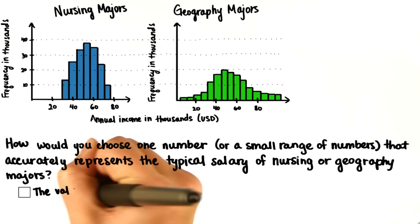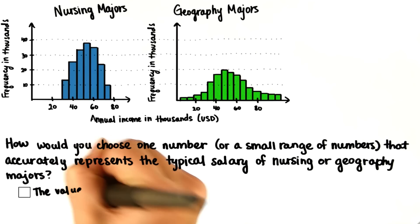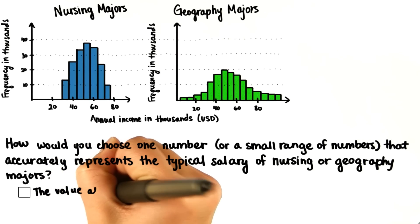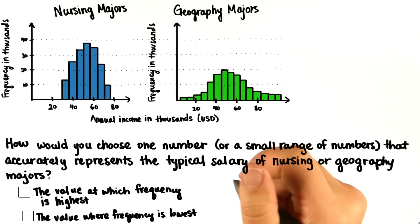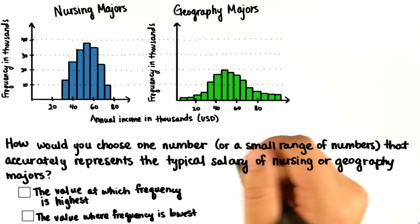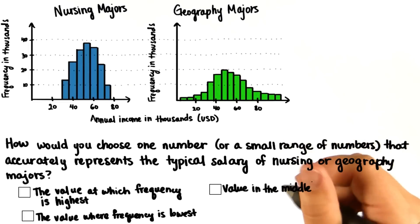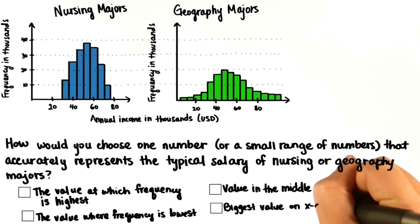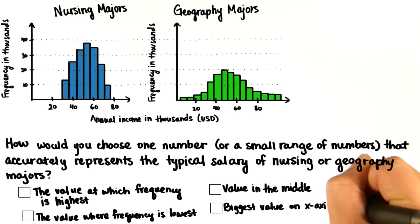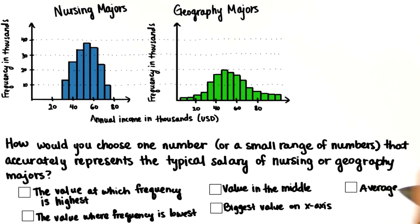Would you choose the value at which the frequency is the highest, the value at which frequency is lowest, the value right in the middle of the distribution, the biggest value on the x-axis, or the average?